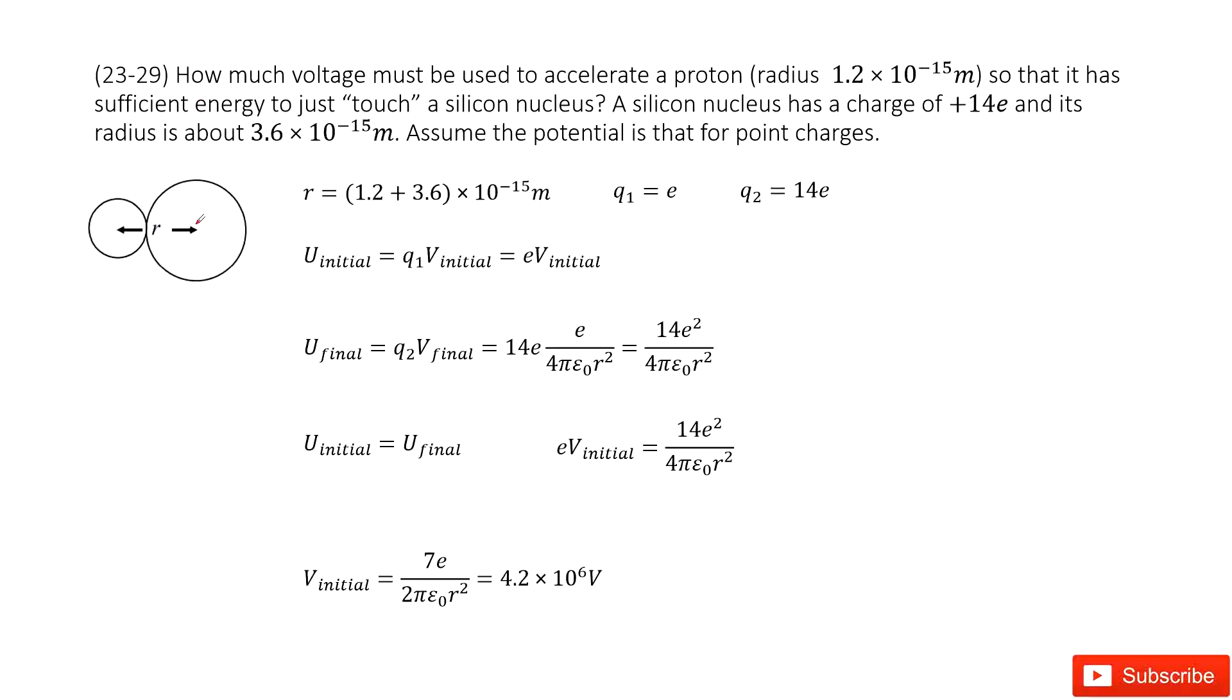We know this is what touch means. Touch means this is the proton, we call it Q1, and this is a silicon nucleus, we call it Q2, and touch means they overlap at the boundaries.